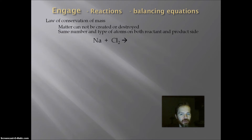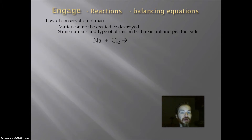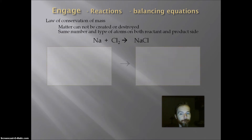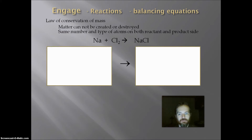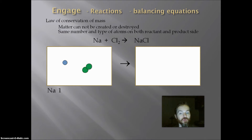So let's look at a reaction: Na plus Cl2, sodium plus chlorine. This is a synthesis reaction, and we learned earlier that in that synthesis reaction it would make sodium chloride. So let's look at it on the atomic level. Na can be represented by this purple sphere, so we have one Na on the reactant side. Cl2, the two green spheres joined together, lets us know that we have two Cls.